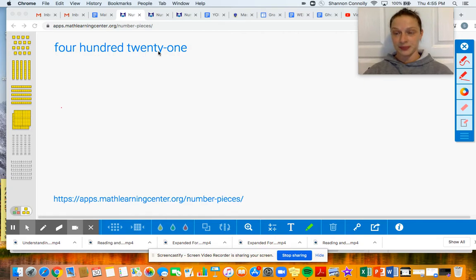421. Notice the word 'and' is not there. We're not saying that when we're talking about whole numbers. 421. So I want to think about, first of all, as you know, there's a hundreds place.